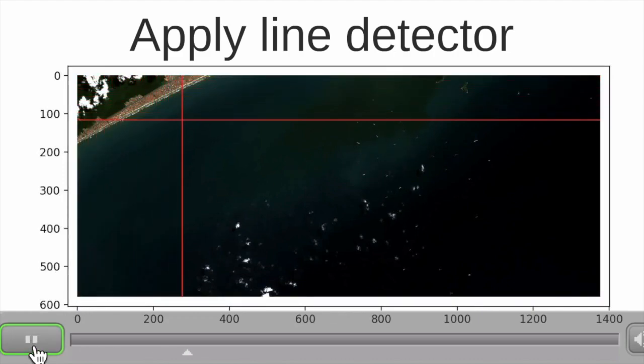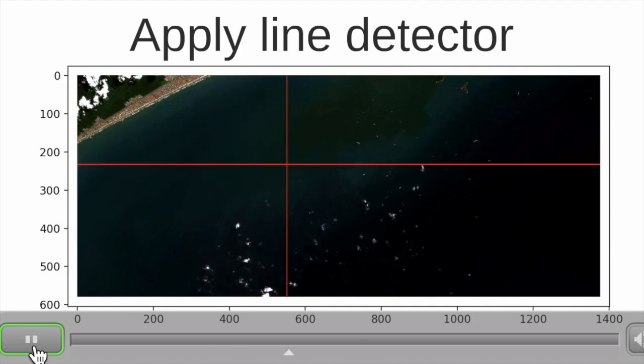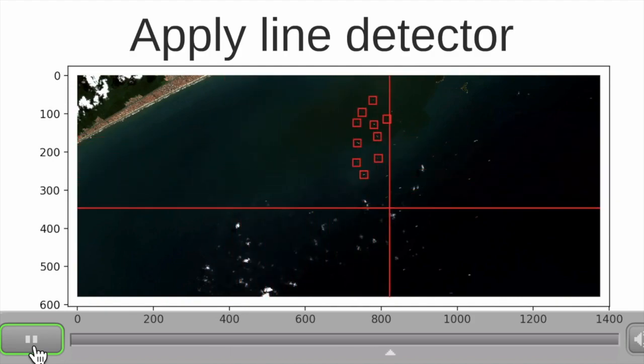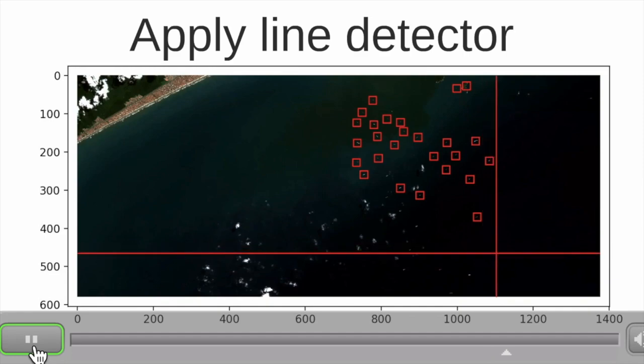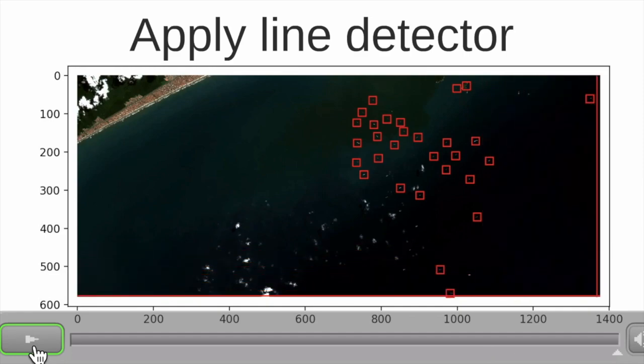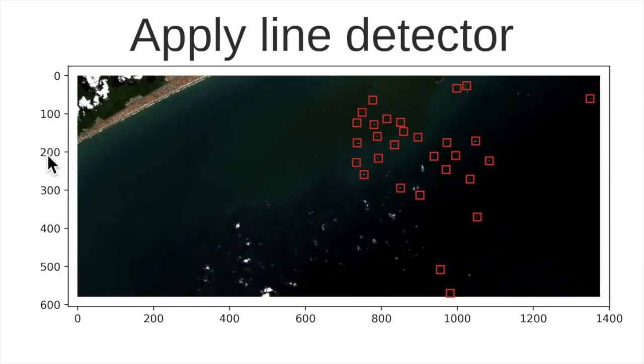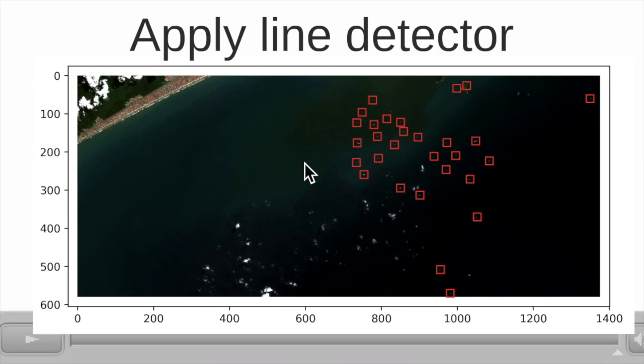So by applying the line detector, we can see that several of our targets will be detected in our image. The line detector is a very simple function, high-pass filters combined to highlight the areas.